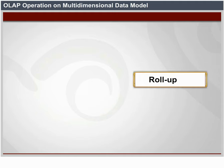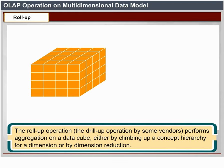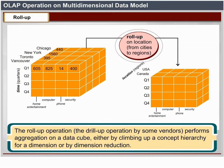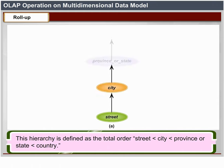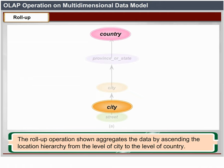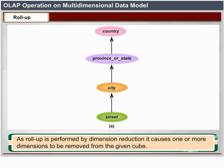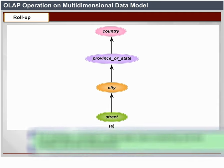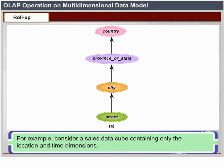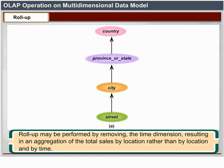Roll-up (also called drill-up) performs aggregation on a data cube either by climbing up a concept hierarchy for a dimension or by dimension reduction. The location hierarchy was defined as street, city, province or state, country. The roll-up operation aggregates the data by ascending the location hierarchy from the level of city to the level of country — that is, rather than grouping data by city, the resulting cube groups data by country. When roll-up is performed by dimension reduction, one or more dimensions are removed; for example, removing the time dimension results in an aggregation of total sales by location rather than by location and time.